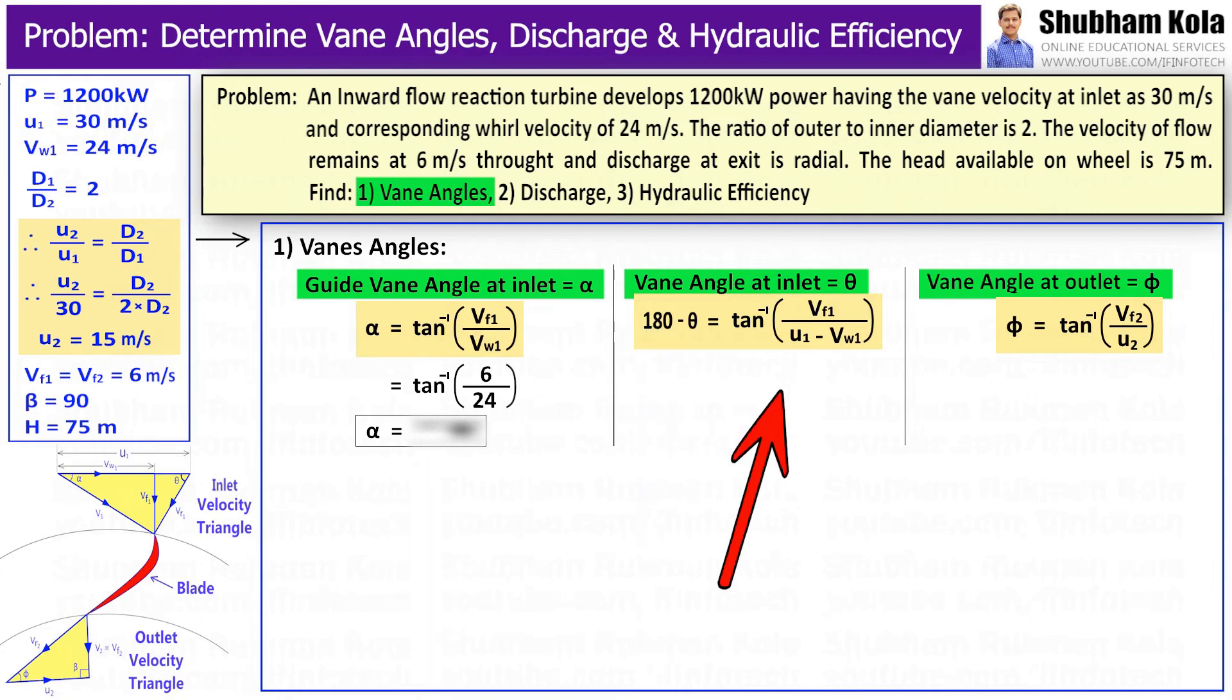And blade angle at inlet can be calculated by the trigonometric ratio, that is tan(180 - θ) equal to vf₁ divided by (u₁ - vw₁). I will substitute the values of vf₁, u₁ and vw₁, and by taking tan inverse, we will get angle θ equal to 135 degrees.